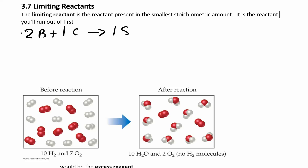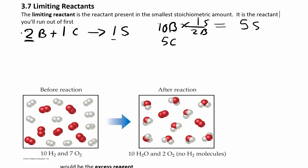Depending on how much bread and cheese you have determines how many sandwiches you make. Suppose you had ten pieces of bread and five pieces of cheese. With ten pieces of bread at two per sandwich, you get five sandwiches. With five pieces of cheese at one per sandwich, you also get five sandwiches. This is the stoichiometric mix — you run out of both reactants at exactly the same time.